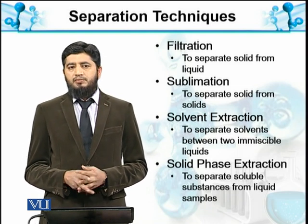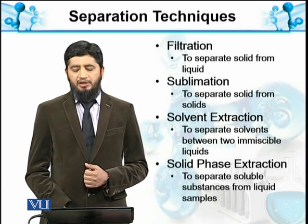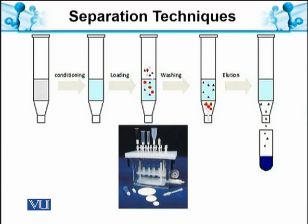Solid phase extraction is another technique used to enrich very minute analyte concentrations. For example, if we are analyzing pesticide residues and water is our matrix, we use this technique to isolate microgram-level analytes from hundreds of liters of water. There are four steps: first, conditioning; second, loading the sample — liters of water — onto the column; third, washing to retain only the particular analyte while removing other interfering ions; and finally, elution to obtain the pure analyte.